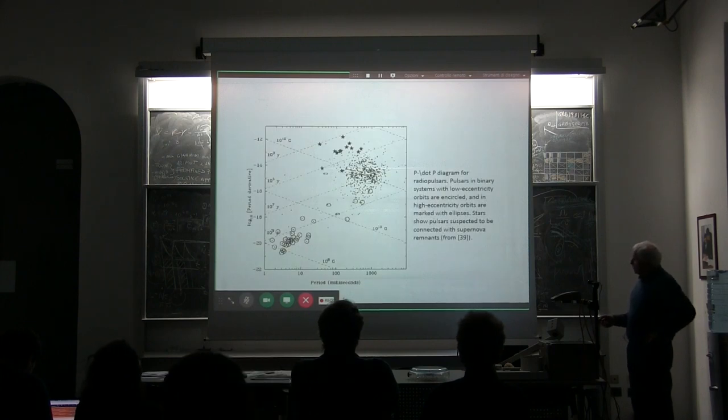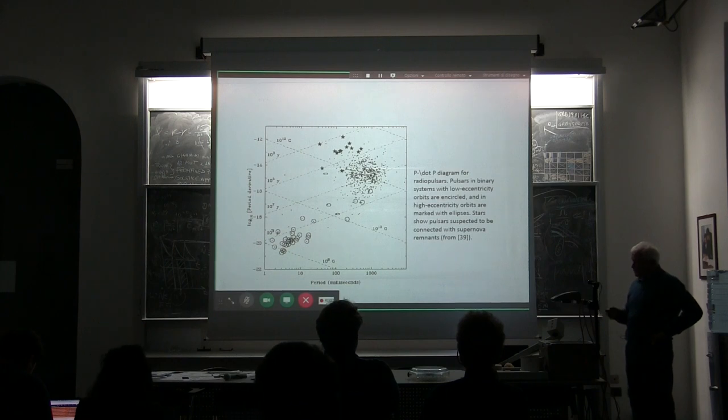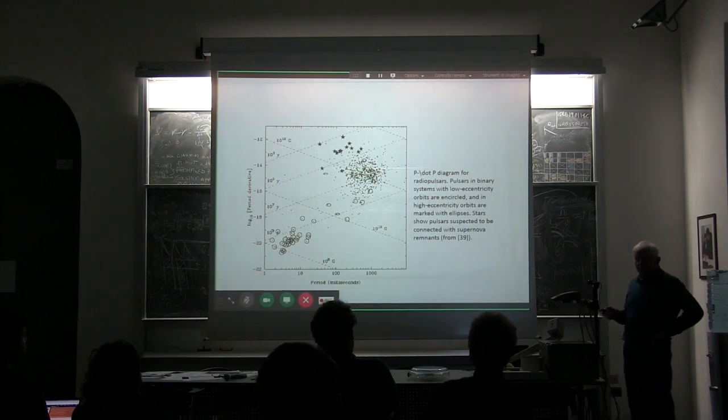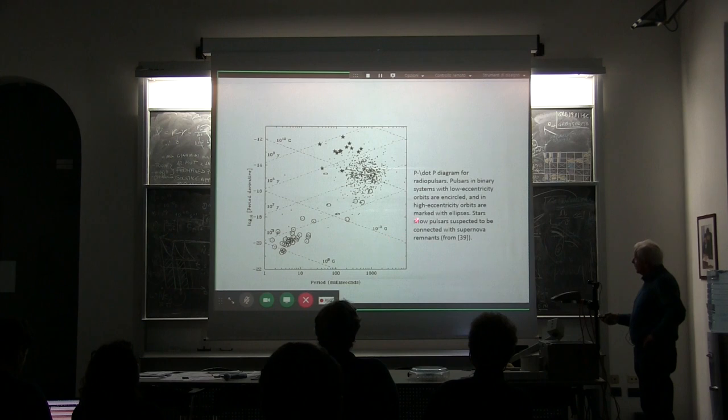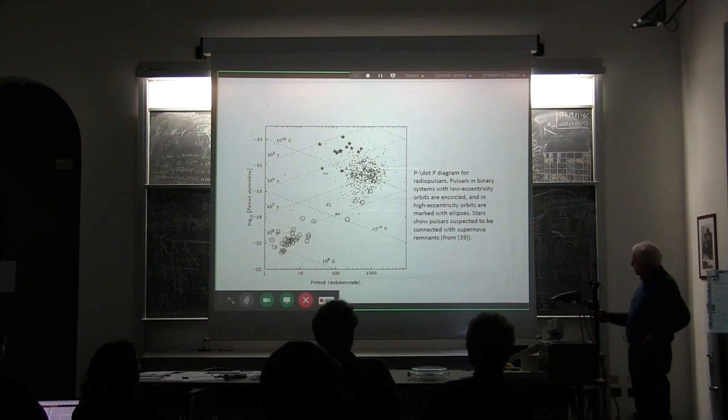Before speaking about soft repeaters, I would like to show you the diagram for normal radio pulsars. Normal radio pulsars are on this diagram PP dot, occupy one very big region with normal pulsars, single pulsars.